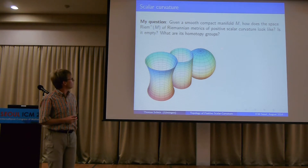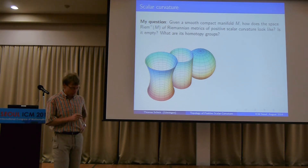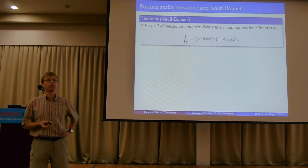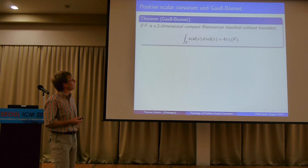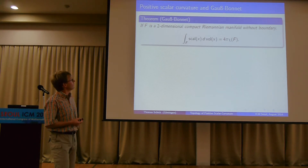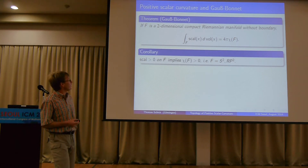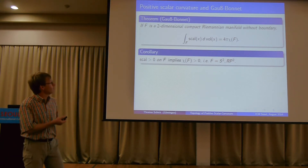As a reminder: in dimension two, there are three types of scalar curvature. The sphere is positively curved, the flat torus has zero curvature, and the hyperbolic surface has negative curvature. This geometry is connected to topology, as seen in Miller's talk — going back a very long time. The Gauss-Bonnet theorem tells us the integral of scalar curvature equals the Euler characteristic up to a positive constant, which implies scalar curvature can only be everywhere positive if the Euler characteristic is positive. By the classification of two-dimensional surfaces, that means the manifold must be a sphere or projective plane P2.